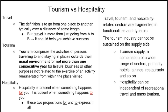Hospitality is present when something happens for you — it's the absence of when something happens to you. Travel, tourism, and hospitality-related sectors are fragmented into functionalities. The tourism industry cannot be sustained on the supply side alone because tourism supply is a combination of a wide range of sectors — primarily hotels, airlines, restaurants, and so on. And hospitality can be independent of recreational travel and mass tourism.